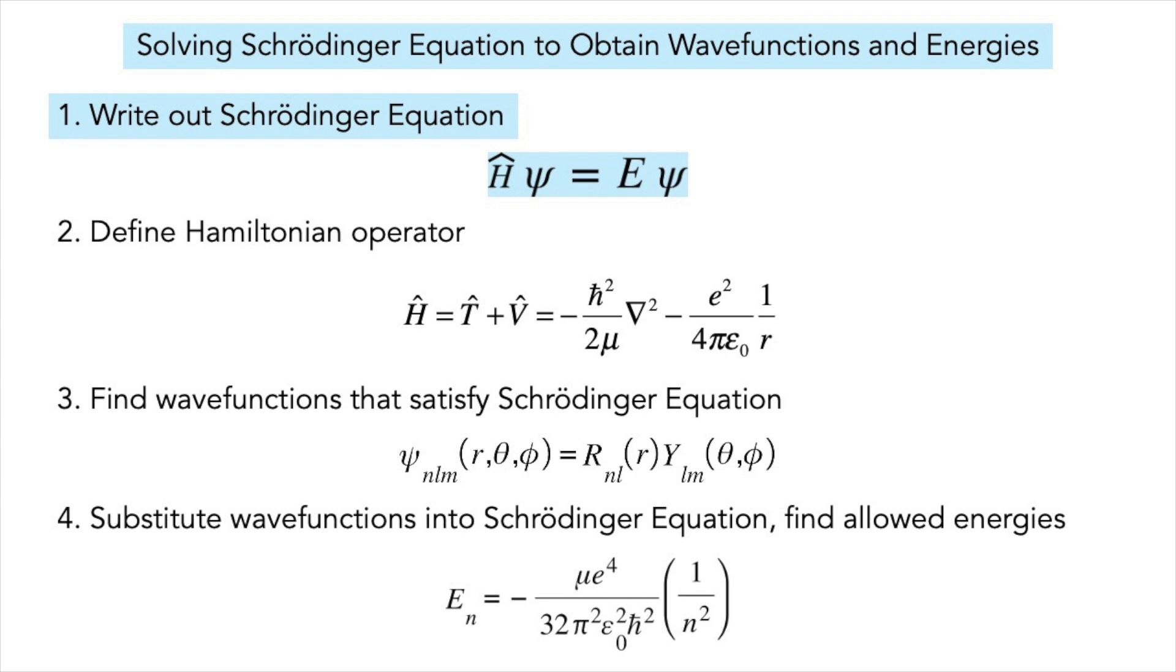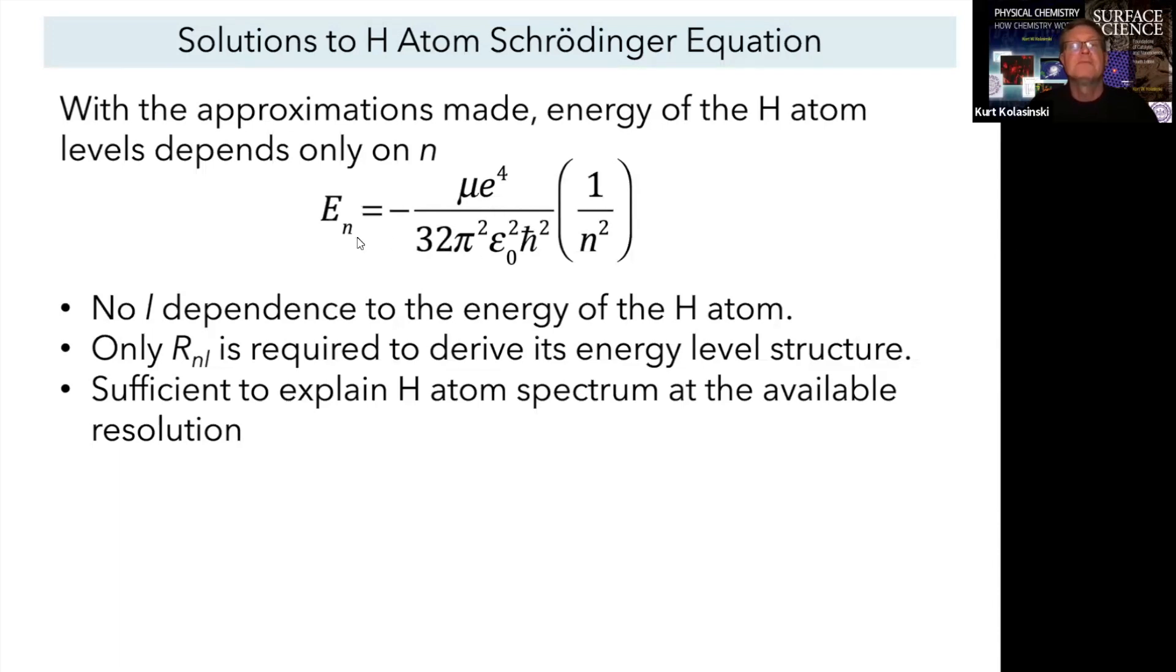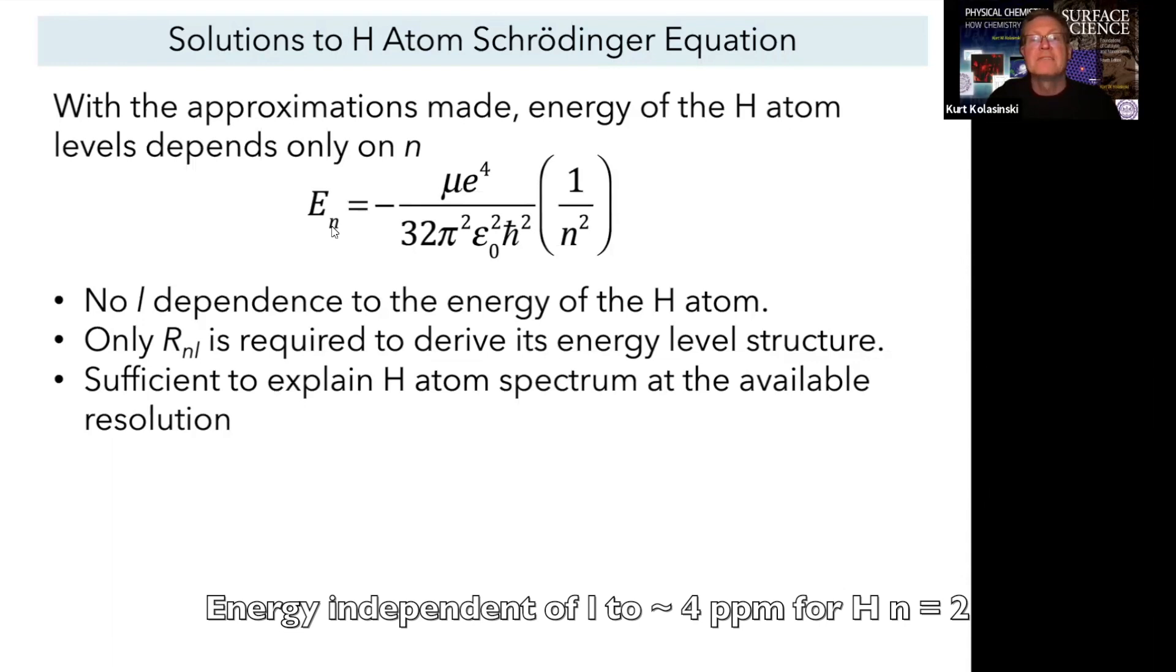We now have solutions for the wave functions. We take those wave functions, substitute them back into the Schrödinger equation, and determine the energy. The energy we find in the Schrödinger equation only depends on n. In one-electron systems, to first approximation, the energy of the levels only depends on n. All s, p, d, f orbitals of the same value of n are all degenerate. There's no l dependence in one-electron systems.